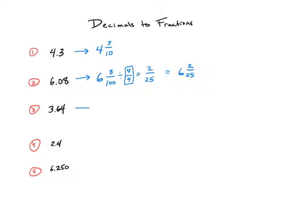Number three, if we read this according to place value, it is three and sixty-four hundredths. Sixty-four hundredths is not in simplest form.